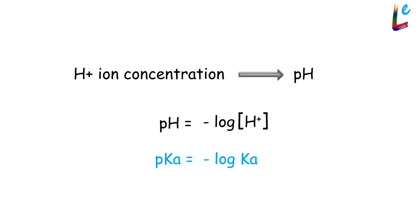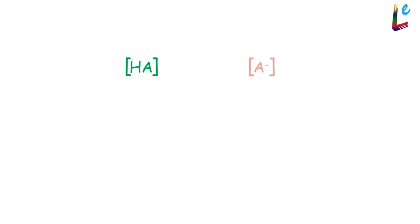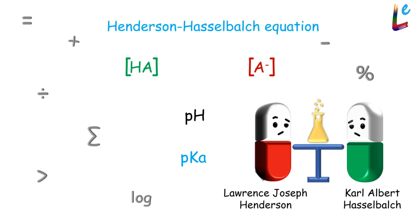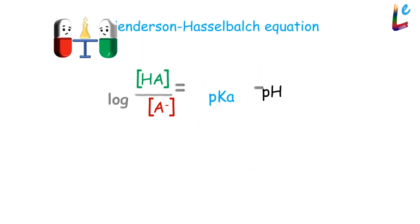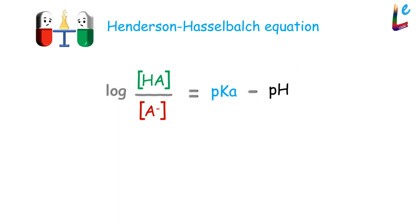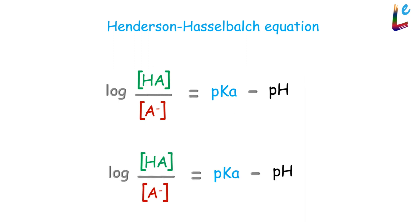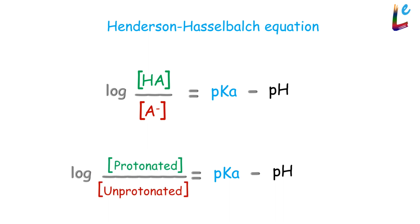How much of HA ionizes into A⁻ depends on two factors: pKa and pH. How exactly are these related? The answer lies in the Henderson-Hasselbalch equation: log [HA] / [A⁻] = pKa − pH. Since H⁺ is a proton, HA is the protonated form. So log [HA] / [A⁻] can also be written as log of the concentration of the protonated form divided by the concentration of the unprotonated form.